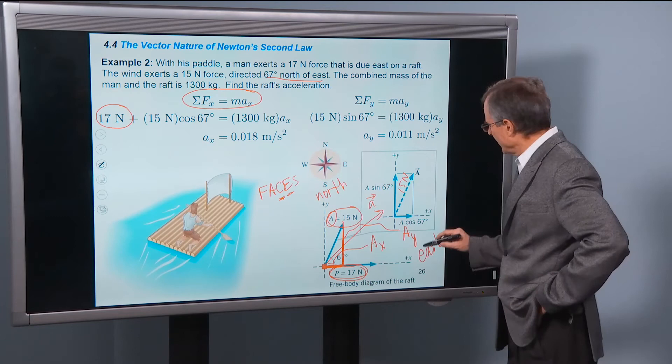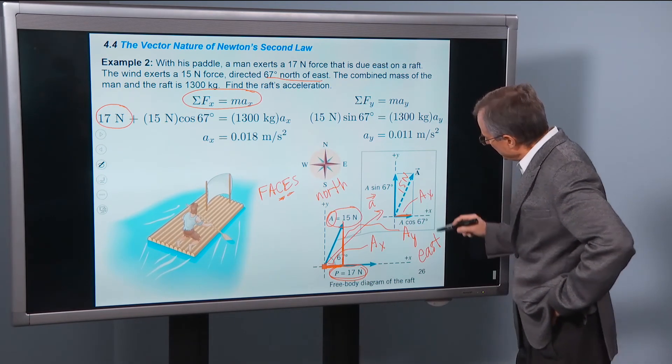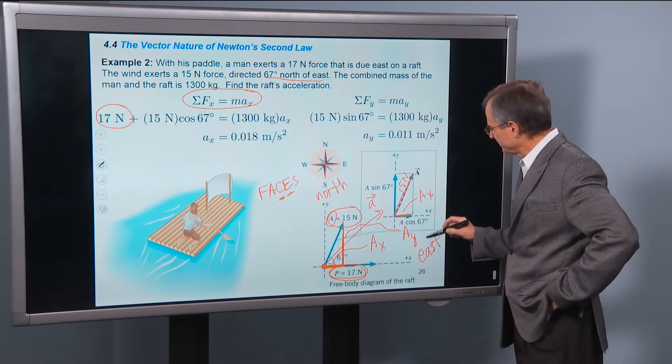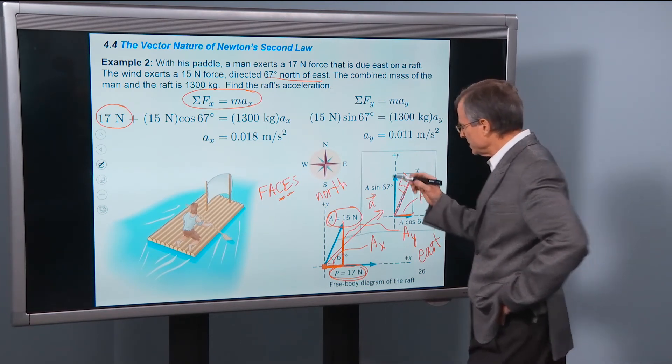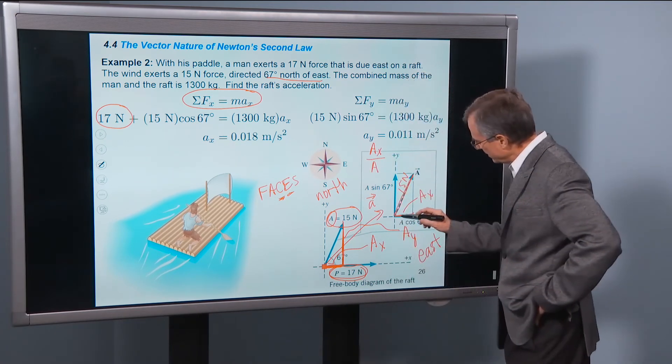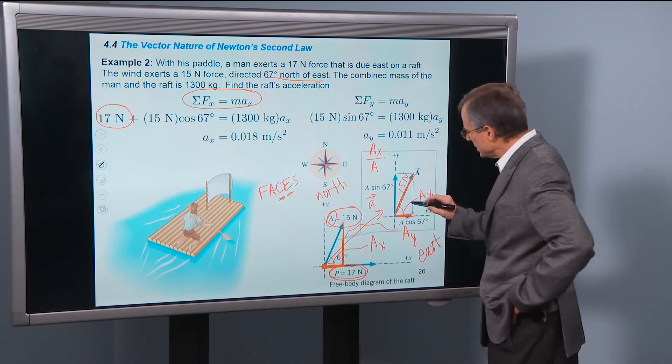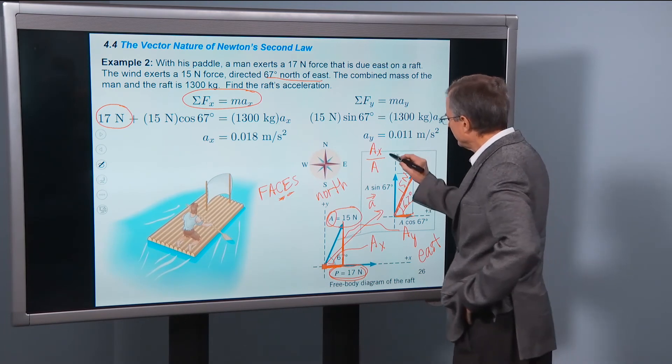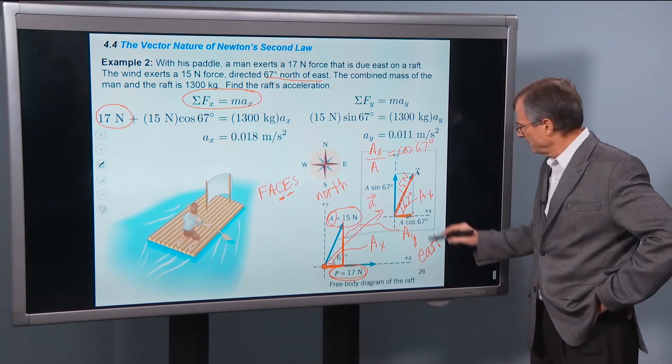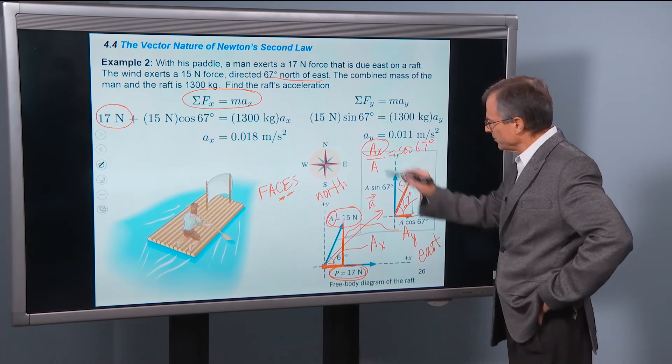The vector magnitude is 15 newtons. Or A. We're calling that A. And if we want the x component of this force, Ax, then Ax over the hypotenuse of 15 newtons is going to equal, Ax over A, that side over the hypotenuse, is the cosine of 67 degrees. Just like we did in chapter one. Adjacent over hypotenuse is the cosine.